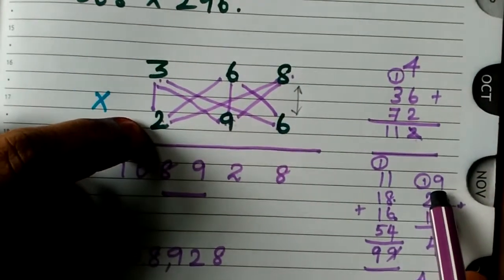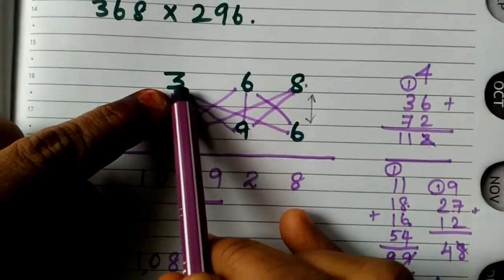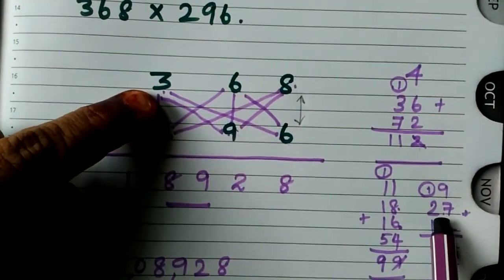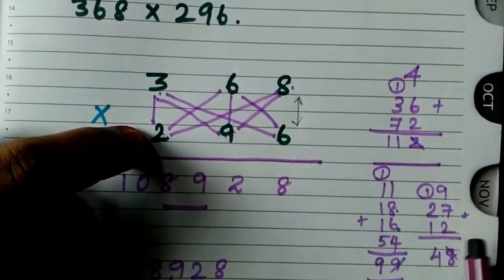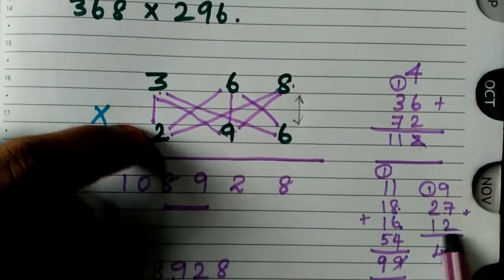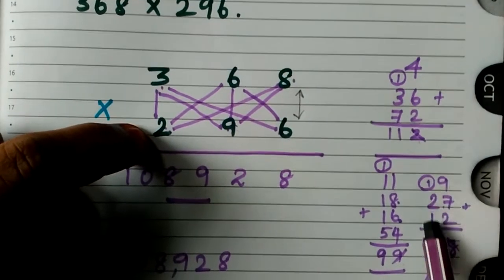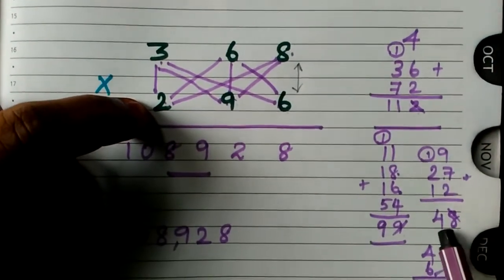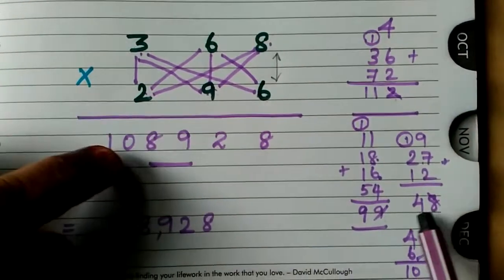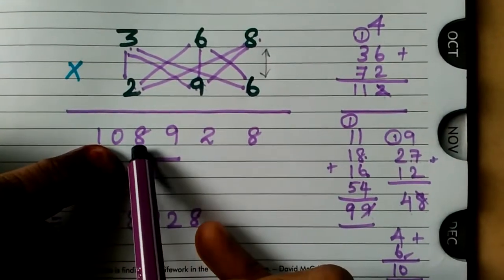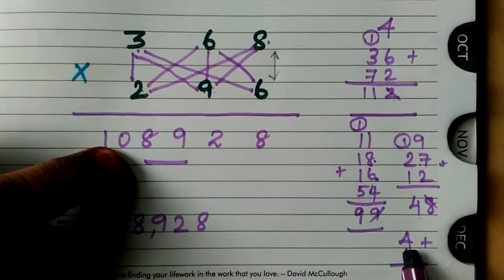The next procedure, how are we going to take the number? 3 times 9 is 27. 2 times 6 is 12. Understand carefully children. Together with the remaining, you have to add it. You will get the value 48. Instead of 48, take 8 and write it here. Then again 4 will be the remaining.